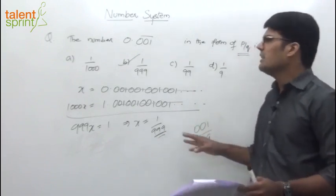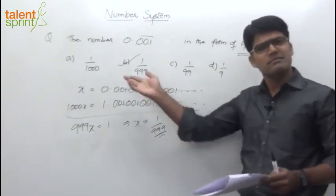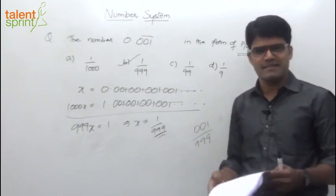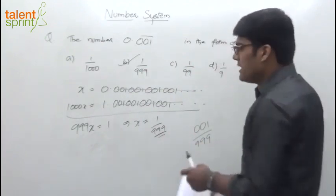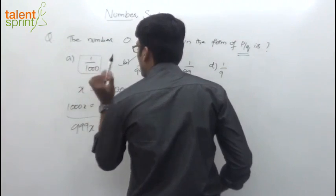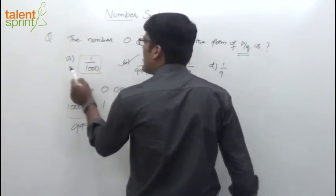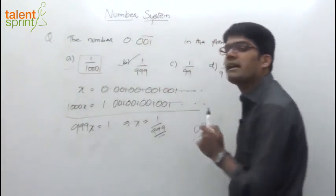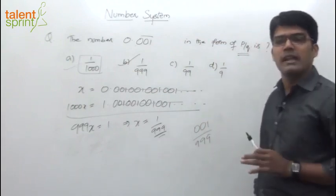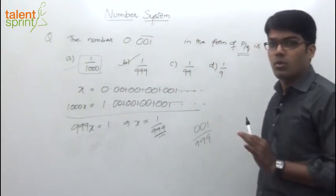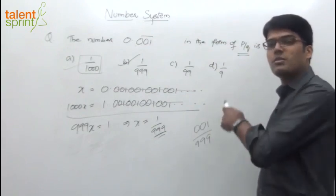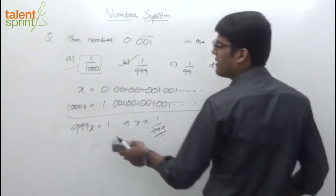Even otherwise, verify from the answer options — it won't take more than 5 or 6 seconds. But make sure you don't mark 1 by 1000 as the answer. I am sure many students will mark option A in a hurry because they see 0.001 and think 1 by 1000 is 0.001. No — it is 0.001 recurring, a recurring number. So you have to take care of that.